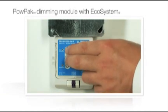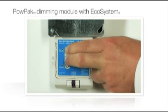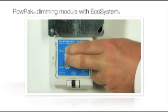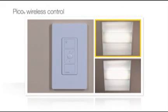To initiate grouping, press and hold the UP arrow and O buttons simultaneously for 6 seconds. Remember, by default, all fixtures are grouped to each device that you have associated to the PowPak Dimming Module with Ecosystem.